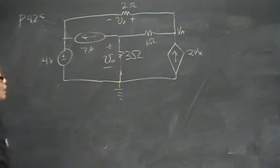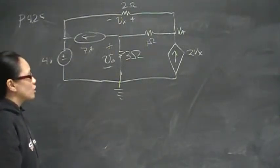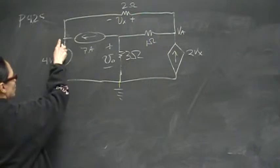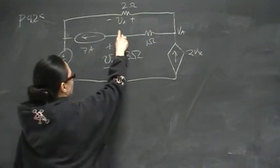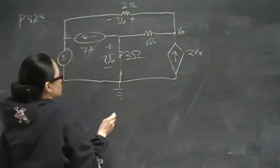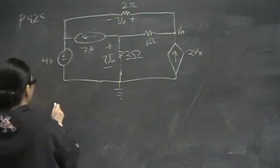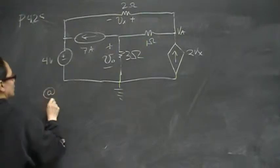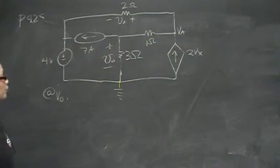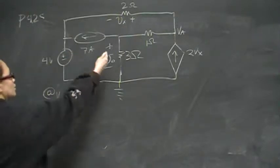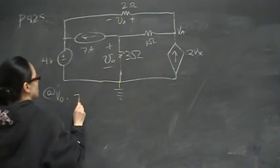Now I really only have two nodes that I need to write node equations for because I already know what this node is - it's 4 volts. So let's start with the node equation at Vout. Remember that node voltage is an application of KCL, so the sum of all the currents away from the node will be zero.